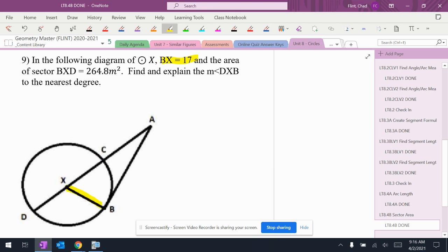We have BX is 17, and the area of sector BXD, which is right in here, is 264.8. We need to find the angle DXB. All right, so let's use the same approach I did two problems ago in number seven.